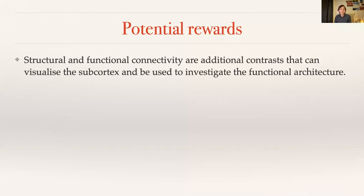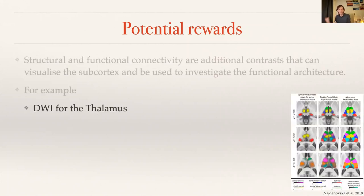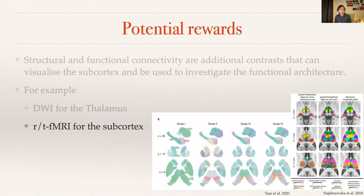Even if you wouldn't care about structure-function relationships, it still makes sense to acquire diffusion weighted data, resting state, or task-based data, because it allows you to parcellate the brain by acquiring an additional contrast. Especially with diffusion weighted data, but also resting state, you can look at connectivity measures. Using diffusion weighted data for the thalamus has been shown multiple times that you can use these contrasts — and resting or task-based fMRI — to parcellate the brain.